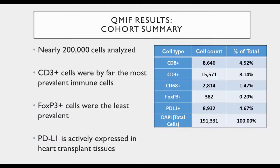Moving on to our study results. In total, nearly 200,000 cells were analyzed for this work. CD3-positive cells were the most prevalent cell type, while FOXP3 cells were the least prevalent. In what was actually a fairly novel finding, it appeared that PD-L1 was pretty widely expressed in heart transplant tissue, which had never actually been clearly defined or documented, at least in human samples.